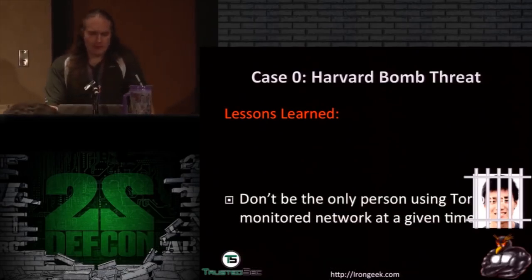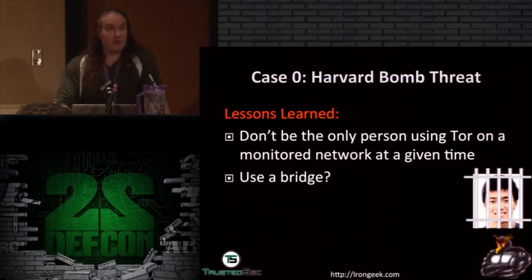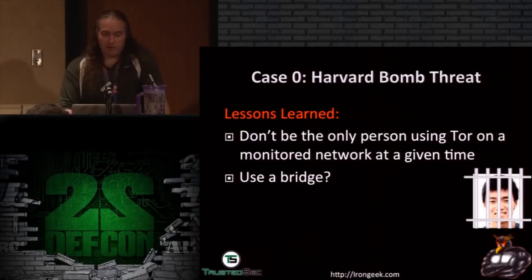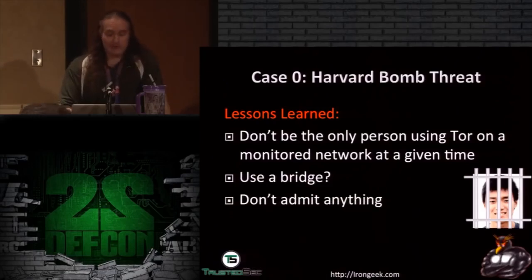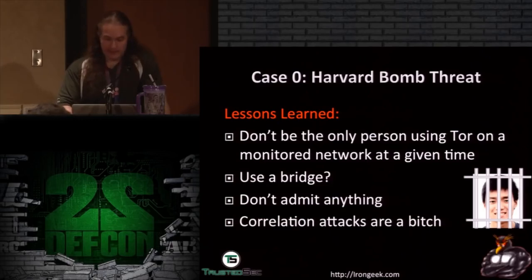Lessons learned from this case: don't be the only person using Tor on a monitored network at any given time. Use a bridge — if he'd used a bridge, he probably wouldn't have been caught. And don't do it in the first place. Don't admit anything — that would have gone a long way. And correlation attacks are a bitch.